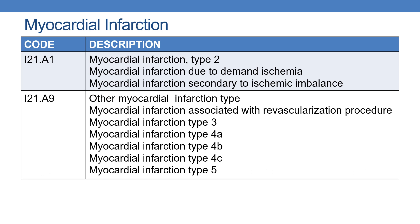Next is I21.A9 — other myocardial infarction type. This applies to Type 3, Type 4A, Type 4B, Type 4C, Type 5, and myocardial infarction associated with revascularization procedures. For all these types, code I21.A9.